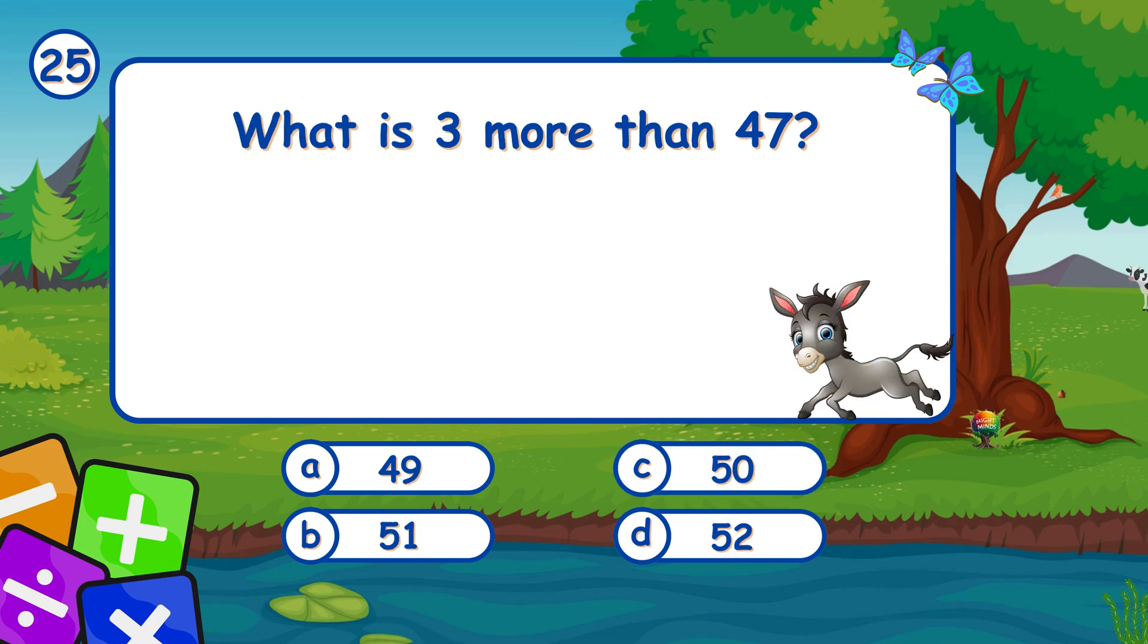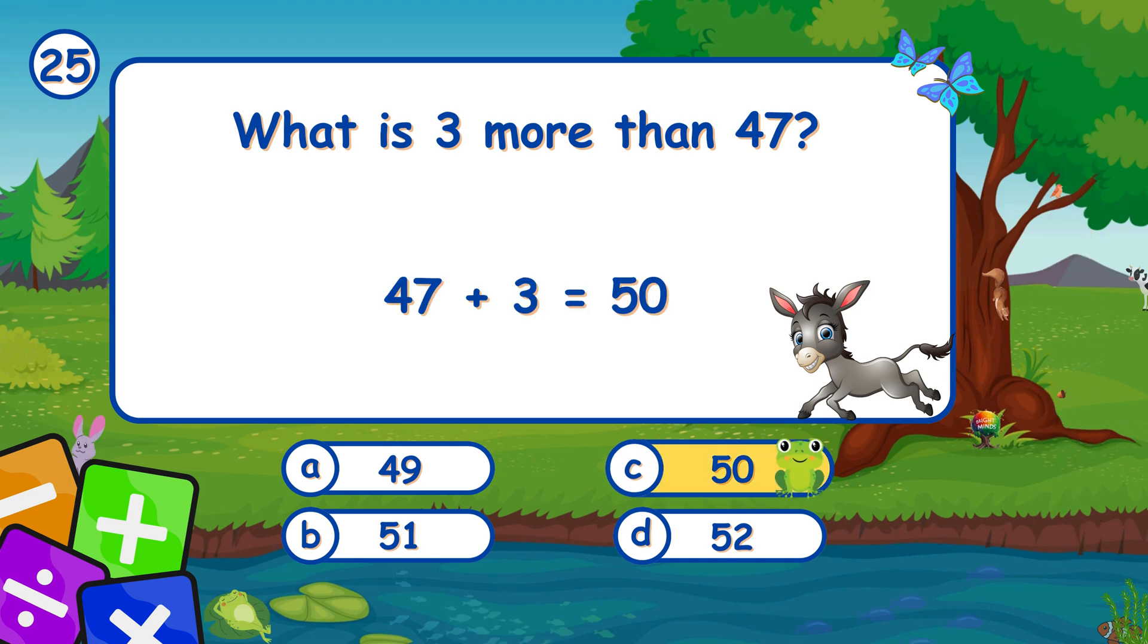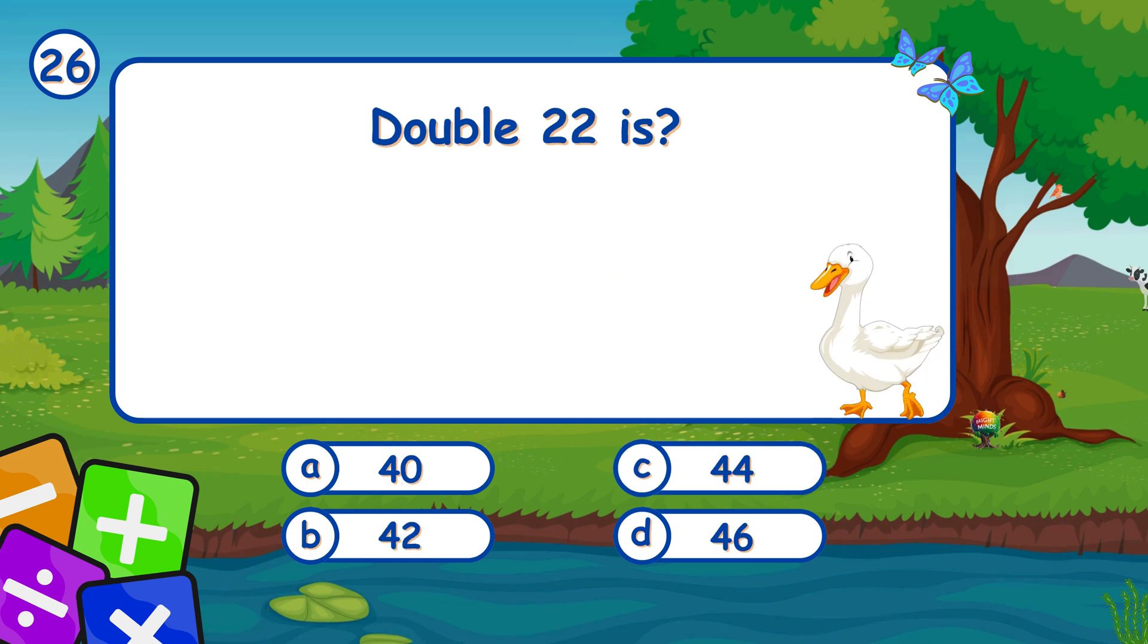What is 3 more than 47? It's C, 50. Adding 3 to 47 gives 50. Double 22 is... It's C, 44. Double 22 is 44.